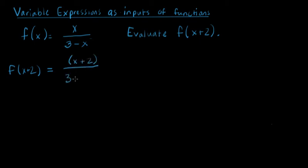So x plus 2 over 3 minus x plus 2. Now on the top we don't really need to do anything, it's just x plus 2. On the bottom we need to distribute this negative sign into the parentheses.